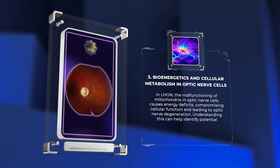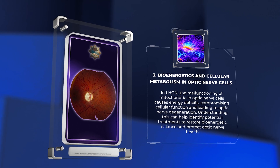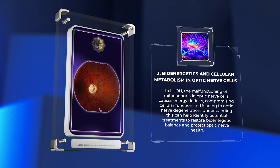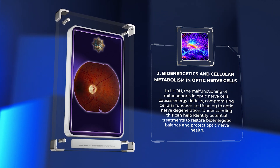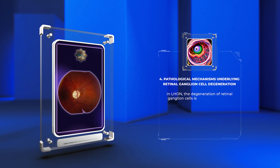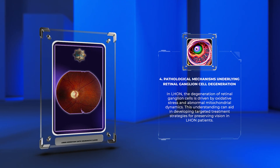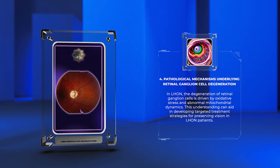The malfunctioning of mitochondria in optic nerve cells causes energy deficits, compromising cellular function and leading to optic nerve degeneration. In LHON, the degeneration of retinal ganglion cells is driven by oxidative stress and abnormal mitochondrial dynamics, which aids in developing targeted treatment strategies for preserving vision.